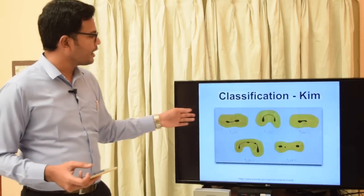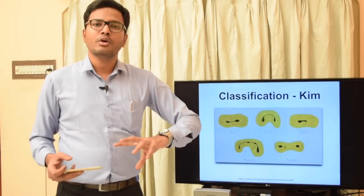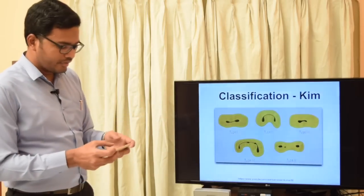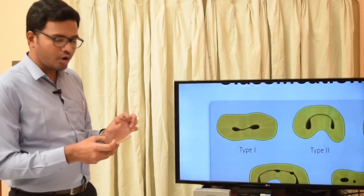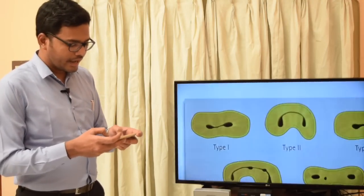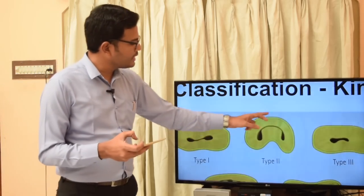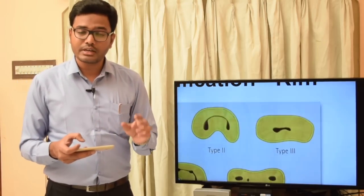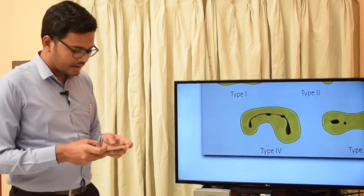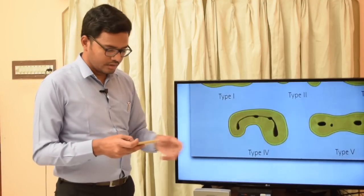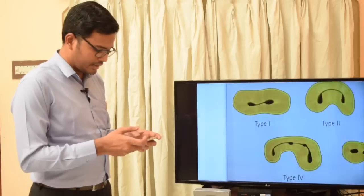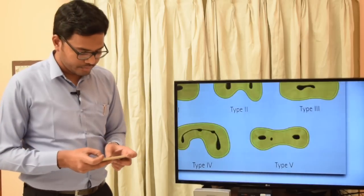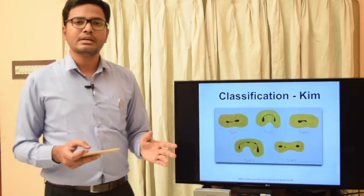In Kim et al.'s classification, these are cross-sectional images: Type 1 shows a short but complete isthmus. Type 2 shows a complete and elongated isthmus. Type 3 shows a complete but very short isthmus. Type 4 shows either a complete or incomplete isthmus which is longer. Type 5 shows an incomplete isthmus with or without any communications.